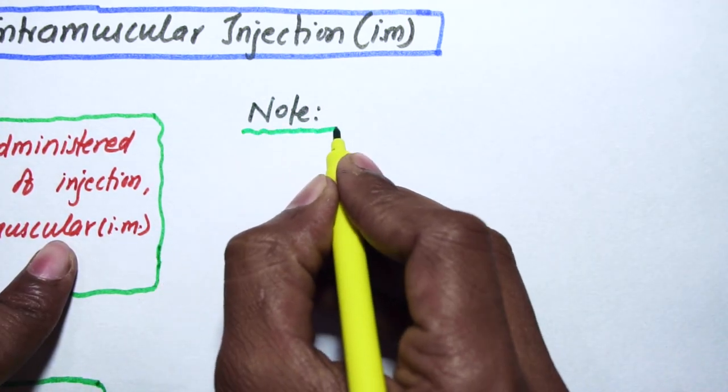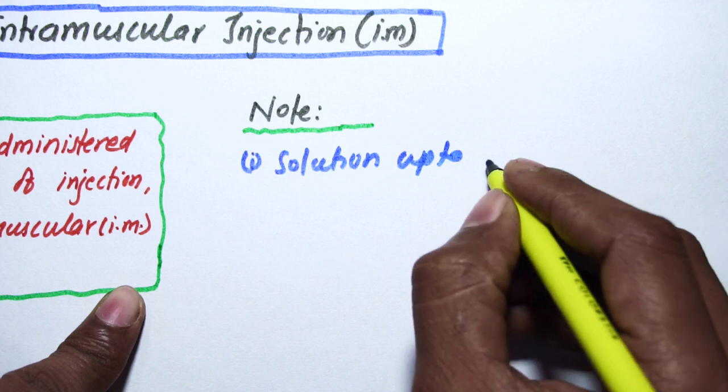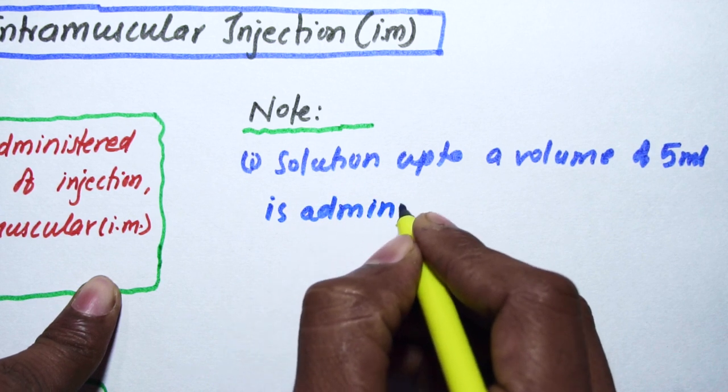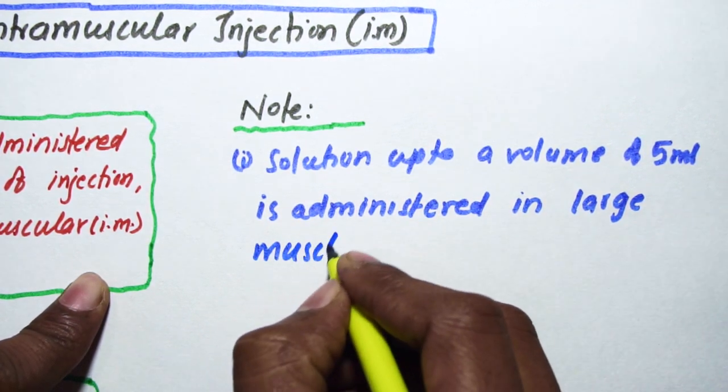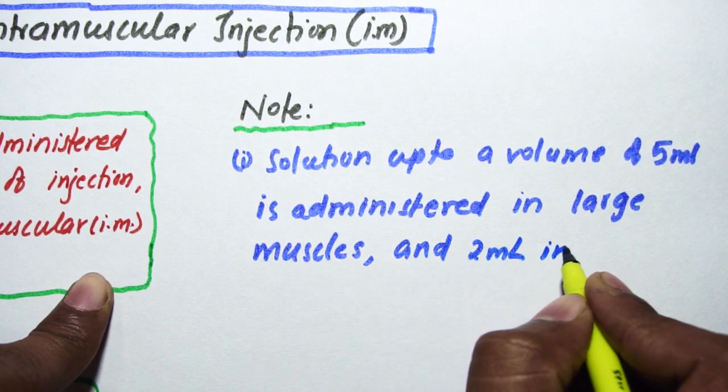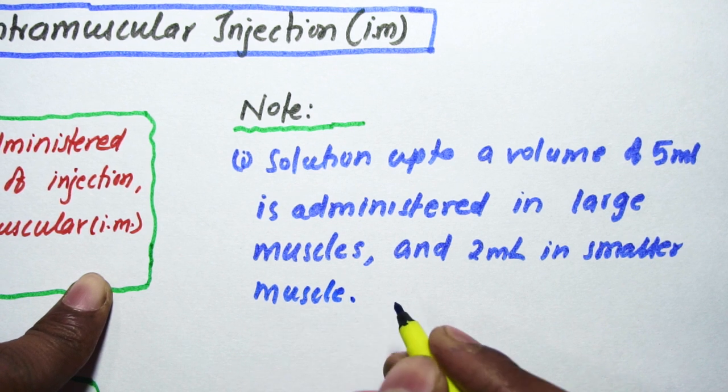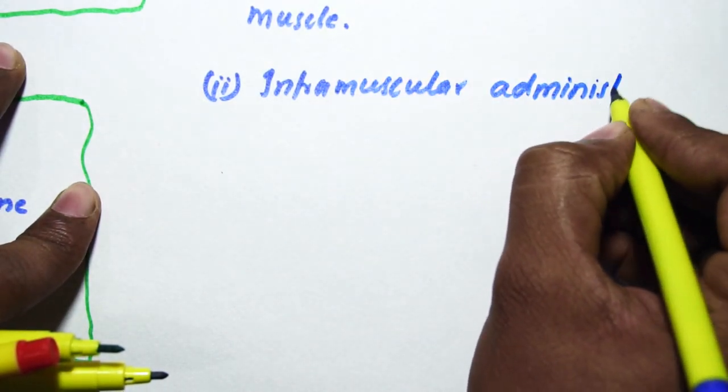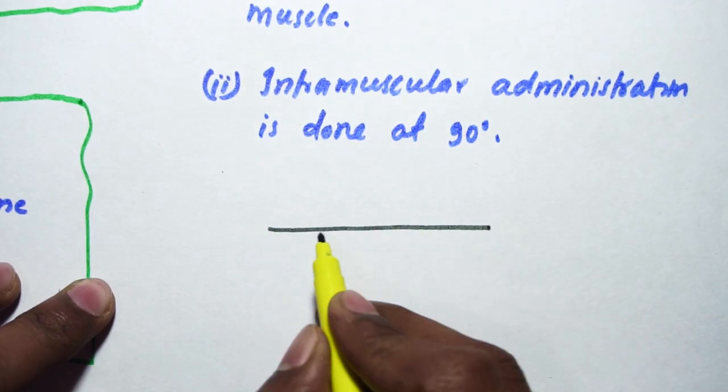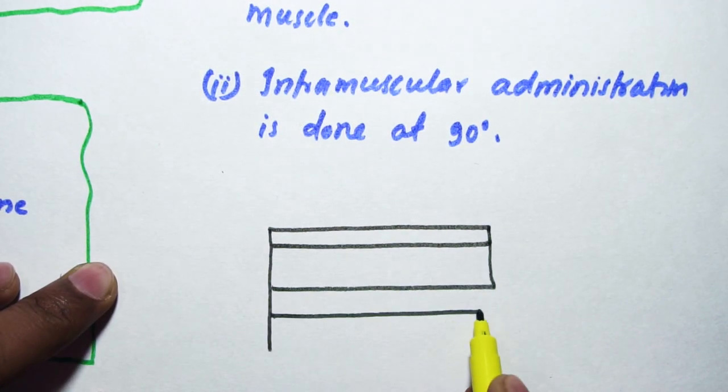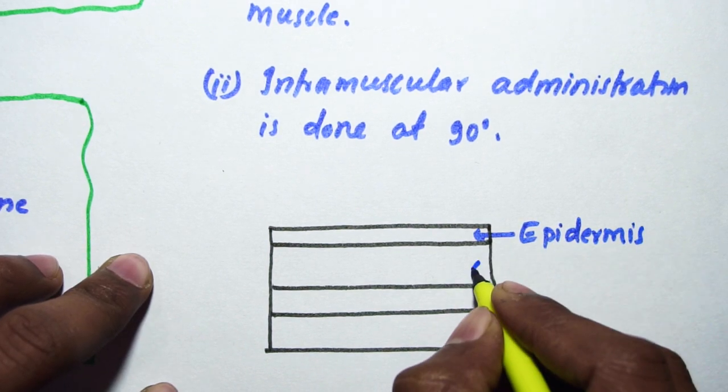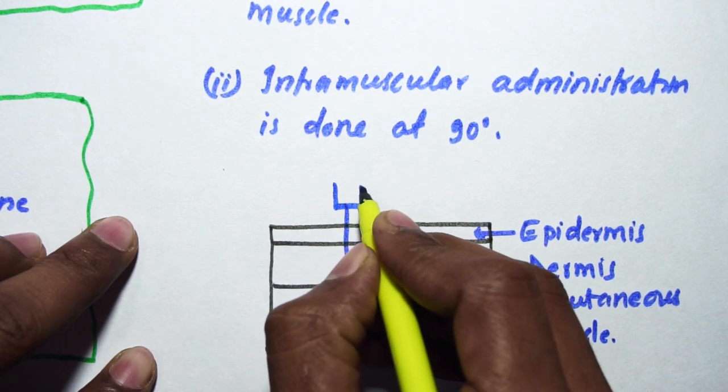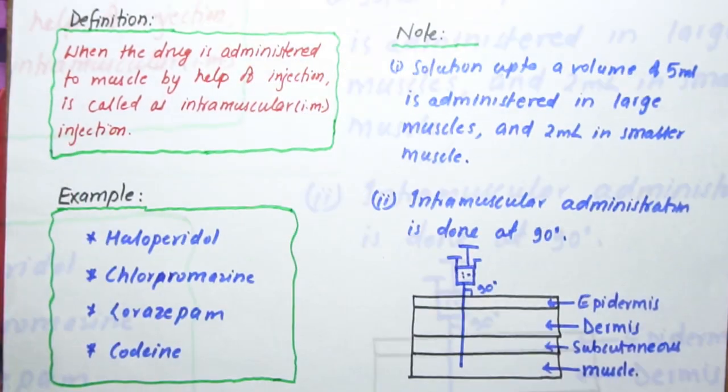A few notes: first, a solution up to a volume of 5 ml is administered in large muscles, whereas 2 ml in smaller muscles. Second, intramuscular administration is done at 90 degrees. In this diagram, the first one is the epidermis layer, then dermis, then subcutaneous layer, then muscle or muscular layer, so the injection has been given at 90 degrees.